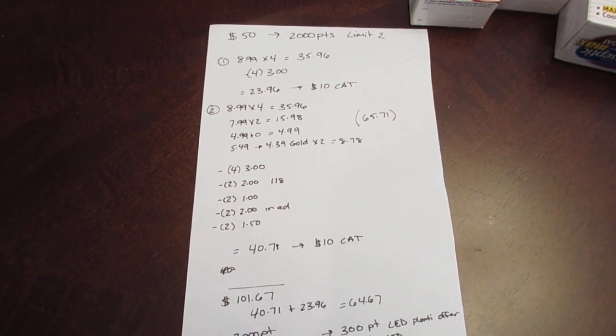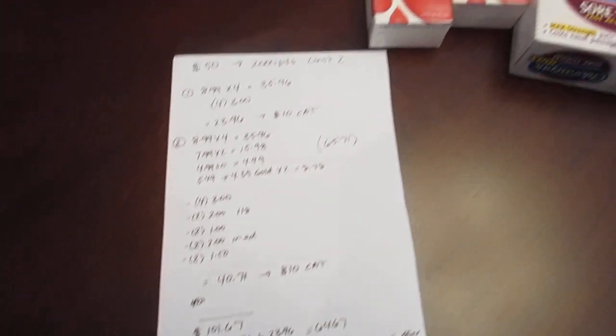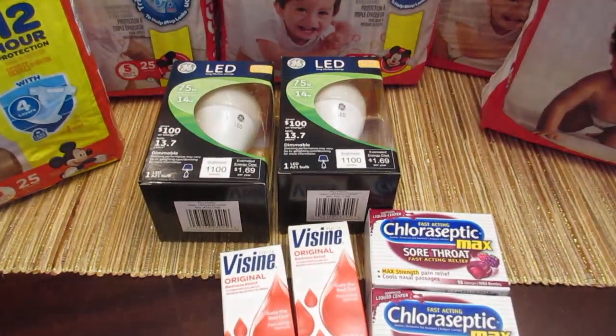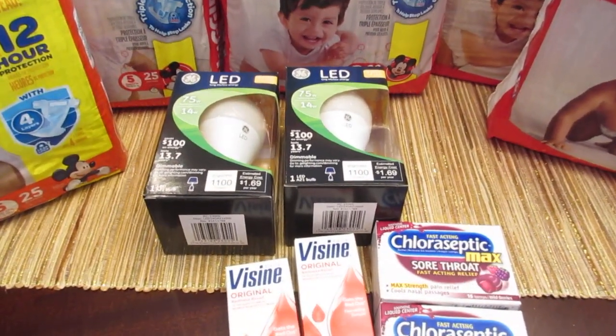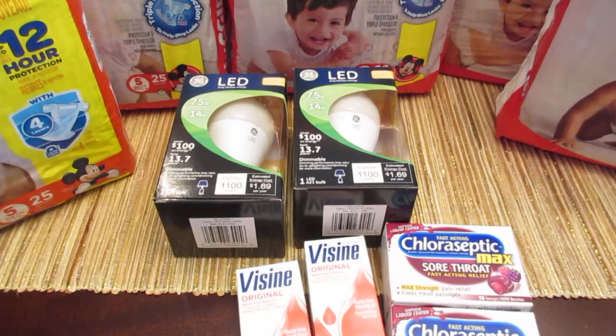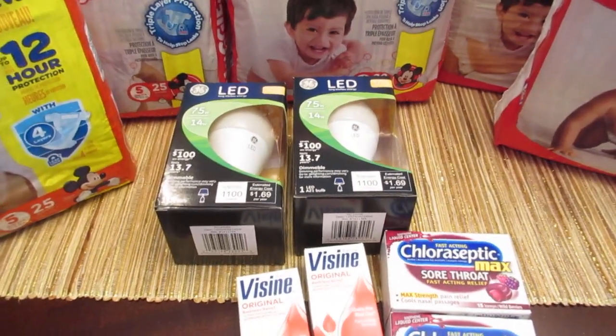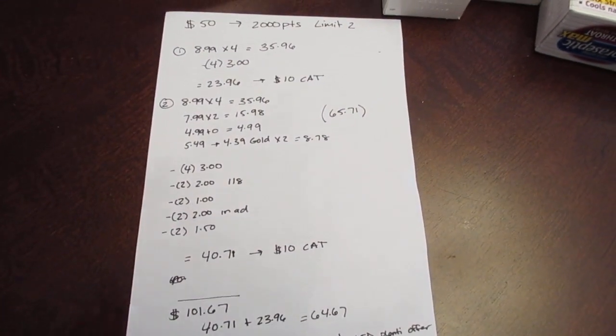So in my second transaction, I purchased four more of the Huggies diapers at $8.99. I purchased two of the LED lights. They are $7.99 each, and they're a great deal this week, because it's a double dip. They're giving you 500 points when you buy one, and they also count towards the starting point deal. So I purchased two of those at $7.99 each, so it was $15.98.